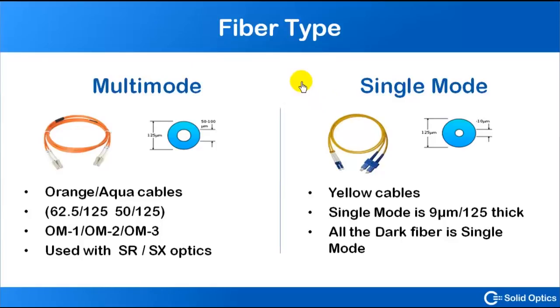The more modern cable is the single-mode cable. Those are the yellow cables. Single-mode is a really thin core, it's got 9 microns thick, so 9/125 is written on the cable. And all the dark fiber in the world is made of single-mode cable.